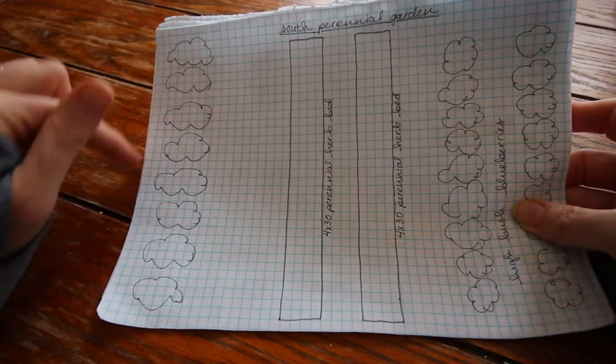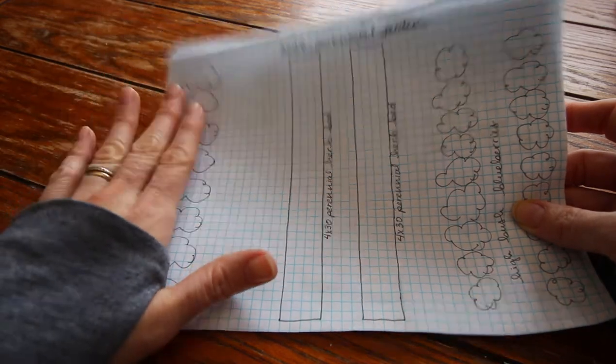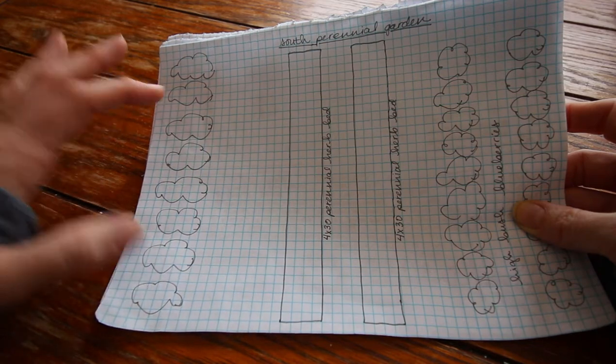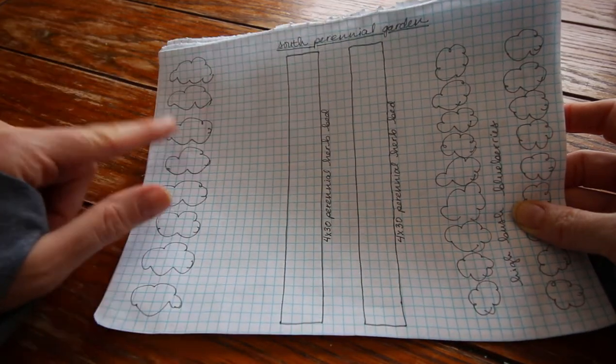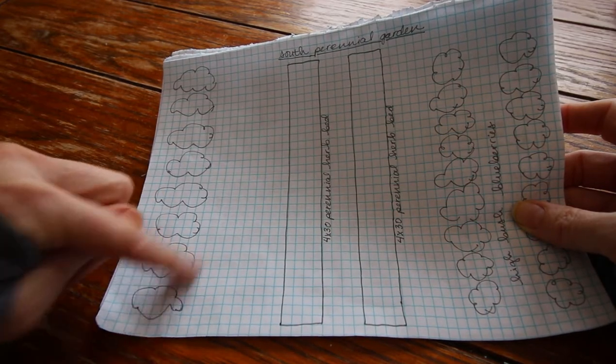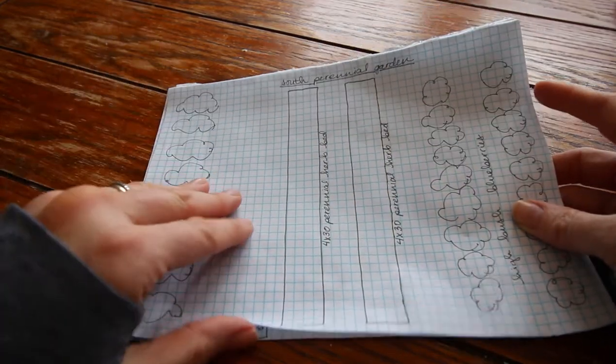This area here is gonna be a big bush kind of area. There's a couple different kinds of fruits that I want to grow here, a couple different kinds of berries, but I'm not a hundred percent sure which one I'm gonna go with yet.